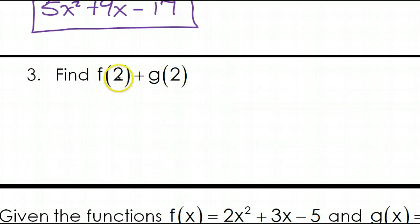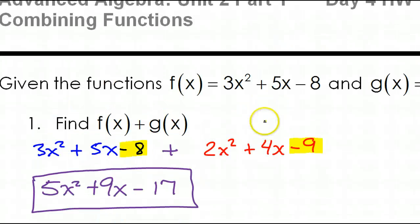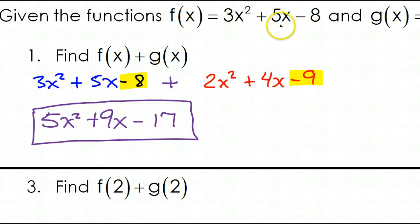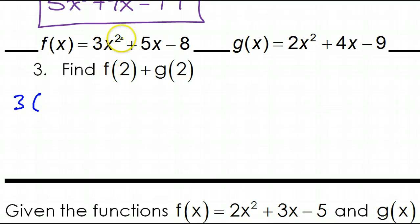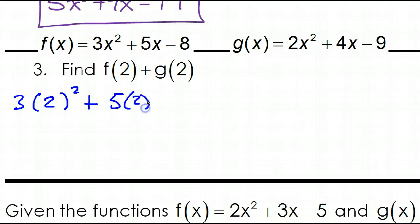Number 3: we have f at 2 plus g at 2. Function f is 3x squared plus 5x minus 8. This 2 inside the parentheses means we're going to substitute 2 for the x's. When substituting for a variable, always use parentheses. So I have 3 times 2 squared, plus 5 times 2, then minus 8. This expression is f at 2.